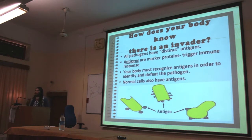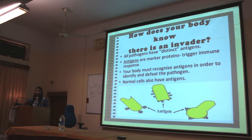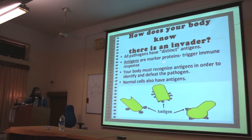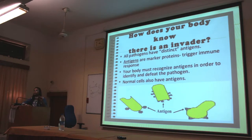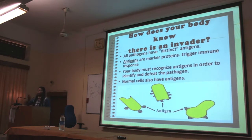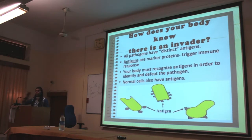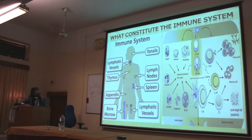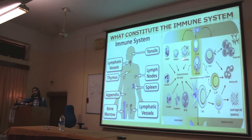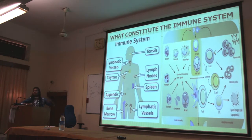How does our body recognize that a particular thing is an antigen harmful to our body? A very specific marker — in the form of a marker protein — is present on the antigen. Once that is recognized, the immune system is triggered and activates accordingly. Various types of cells and systems work together to eliminate the pathogens.